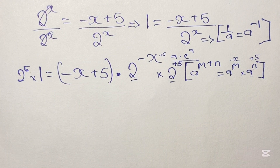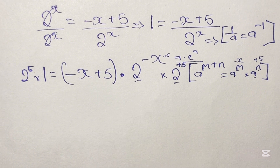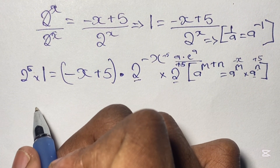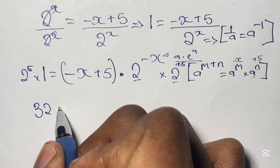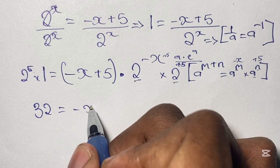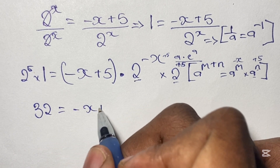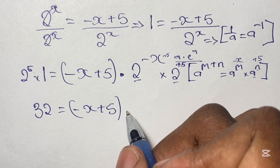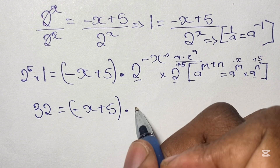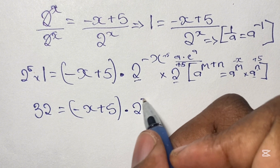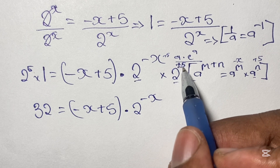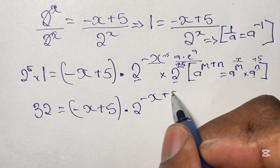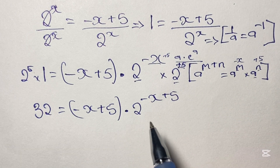Rewriting what we have: 2 to the power of 5 is 32, and 32 times 1 is just 32. So we have 32 is equal to negative x plus 5 times 2 to the power of negative x plus 5, since multiplying by 2 to the power of 5 allows us to simply add the powers to get negative x plus 5.